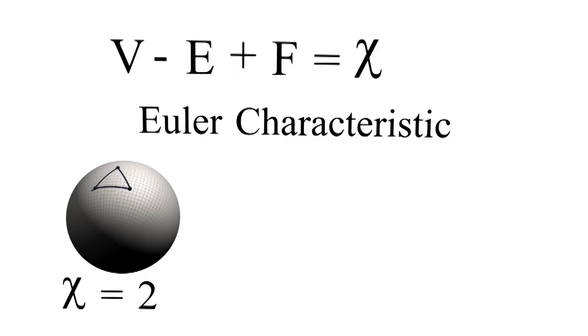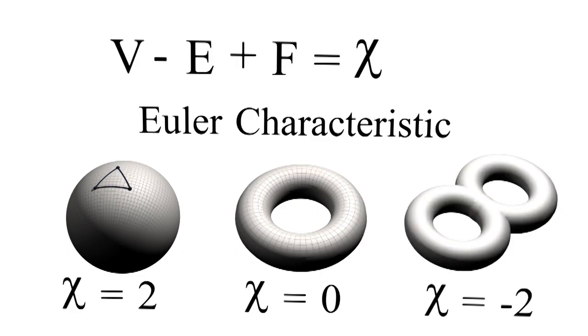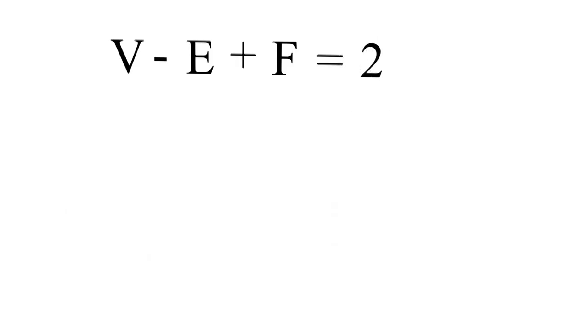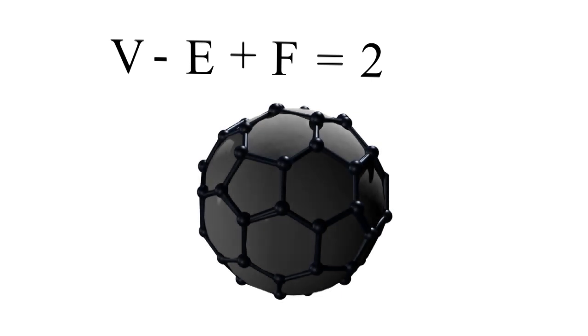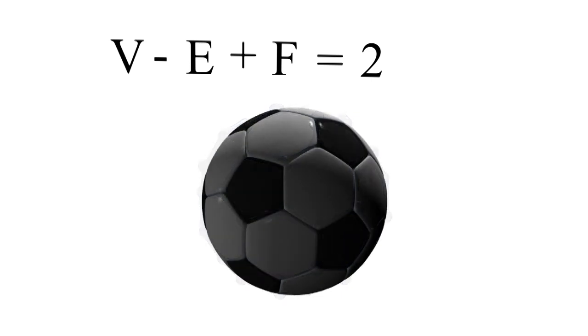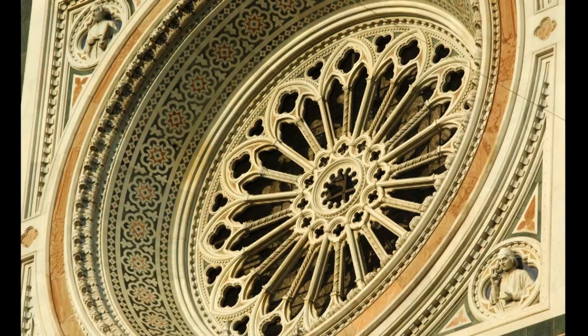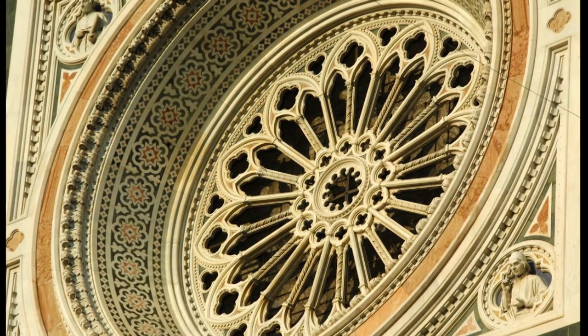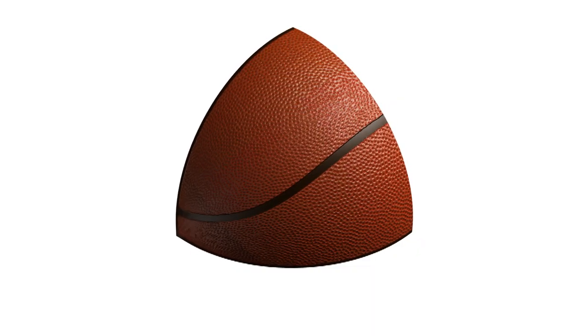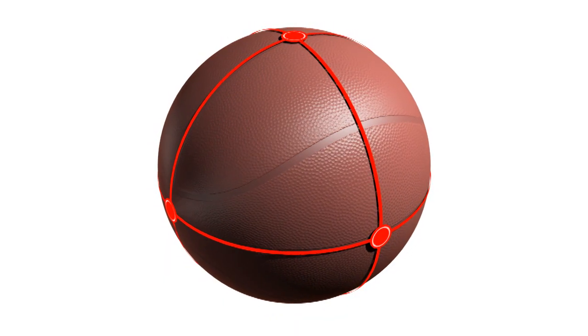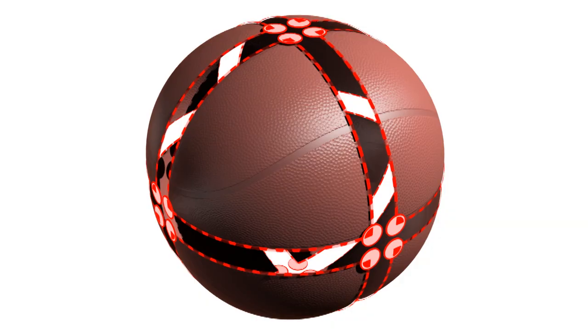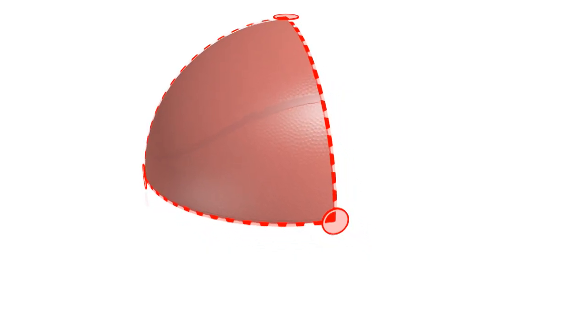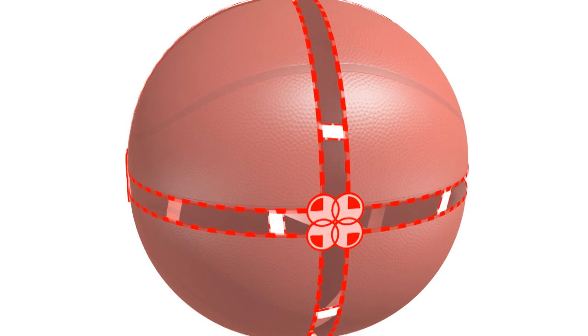The Euler characteristic is two for spheres and planes, zero for donuts, and negative two for double donuts. The Euler map theorem tells us what kinds of shapes can be copied onto a sphere — these shapes define the symmetry. Whenever you have an object with symmetry, you have some shape or pattern that is repeated multiple times. For a basketball, we start with a pattern and then copy it eight times. Now let's think about this as a graph: think of the pattern as a collection of vertices, edges, and faces that are repeated eight times. The technical term for this is an orbifold. Our orbifold has vertices and edges; if we copy them eight times, we get vertices and edges that make up a sphere.